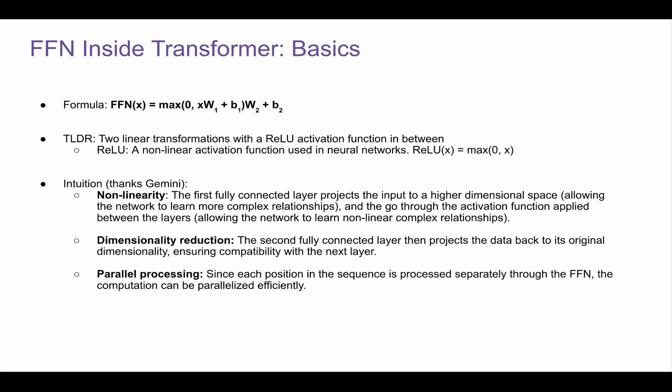First of all, let's take a look at the basics. The formula of Feed Forward network is FFN(x) = max(0, xW1 + b1)W2 + b2. As you can see, there's a max zero, xW1 plus b1, and then W2 plus b2. This is basically two linear transformations. The first one is xW1 plus b1, the next one is W2, this whole block plus b2. So there are two linear transformations with a ReLU activation function in between.